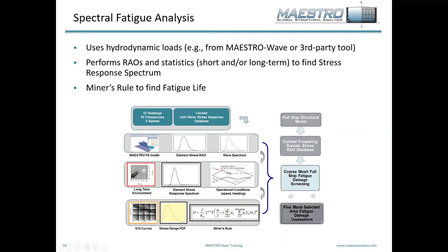Similarly, that is done on the spectral fatigue analysis side. You use the same unit wave database, but instead an element stress RAO is created. The response spectrum is now for the element stress rather than the hull girder load. Rather than computing the lifetime extreme, it uses Miner's rule to sum up the fatigue damage over the life of the ship, using the stress range PDF and the selected SN curves. It sums up, on an element-by-element basis throughout the entire ship, all of the fatigue damage.